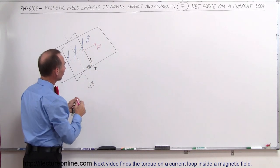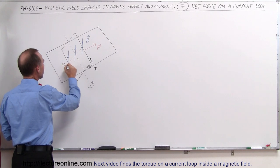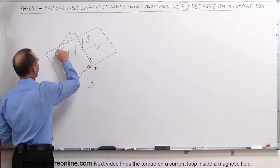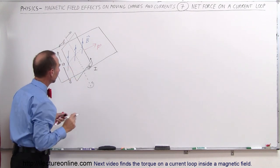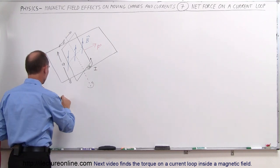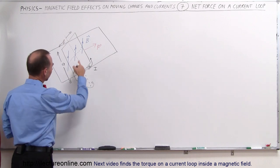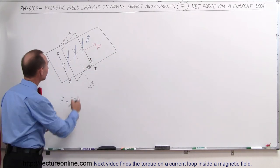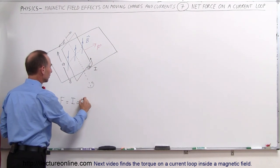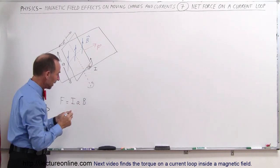To establish the size of the force, let me give you the dimensions of the loop. The length here is equal to A, and the length in this direction is equal to B. The force on a line of charge is equal to the current through the line times the length of the line — in this case that would be A — times the strength of the magnetic field B. So IAB would be the magnitude of the force in this direction.